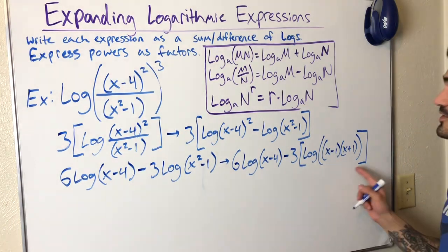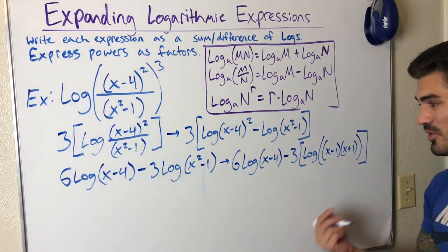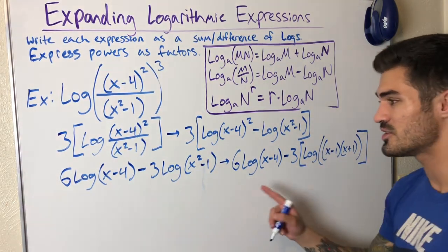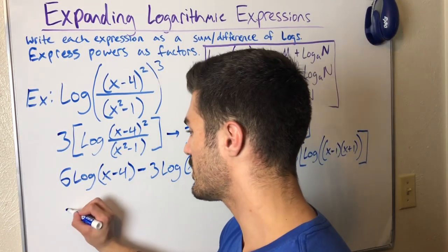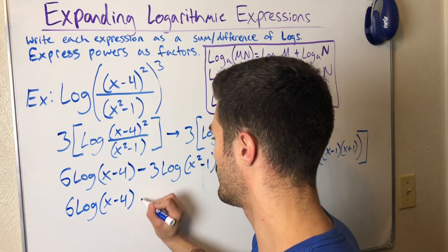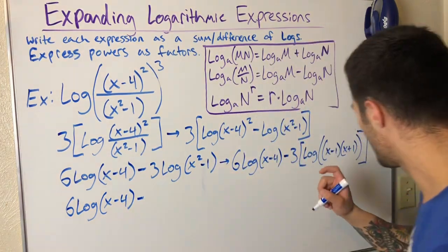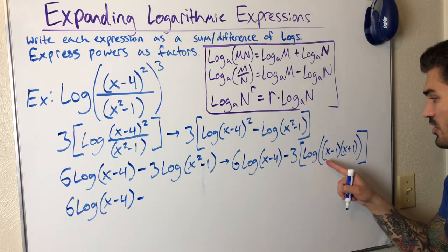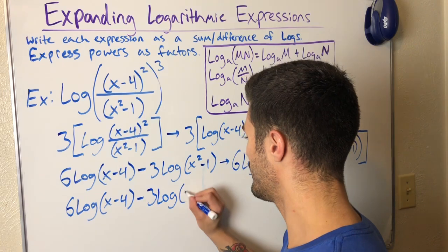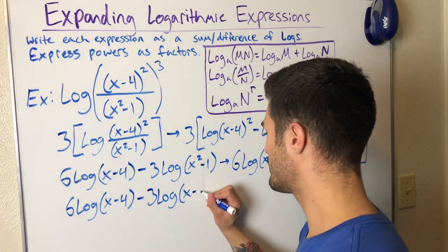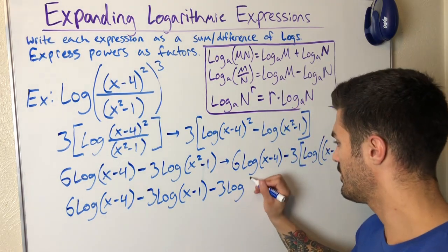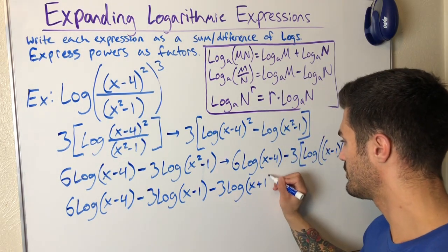So again, when I separate this, I can do addition. But that's why I was thinking about the brackets already. Because when I do this addition, this negative three is going to go to both of these. So I just have to be careful of that. So again, I can write my six log x minus four here. That part is good. Minus three times this log x plus one. Minus three log x minus one minus three log x plus one. Hopefully that makes sense.